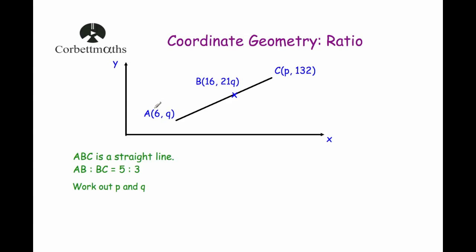Our last example: we have a straight line with A at (6, Q), B at (16, 21Q), and C at (P, 132). ABC is a straight line and AB to BC is 5 to 3. We need to find P and Q. Let's start with the x-coordinates to find P. The x-coordinate of A is 6 and of B is 16, so the difference is 10 — we go 10 across from A to B.